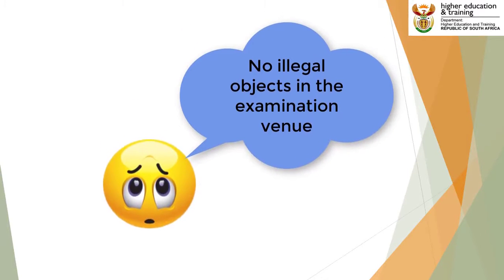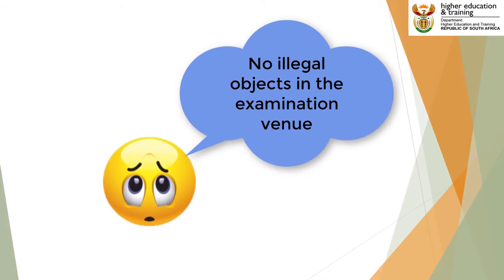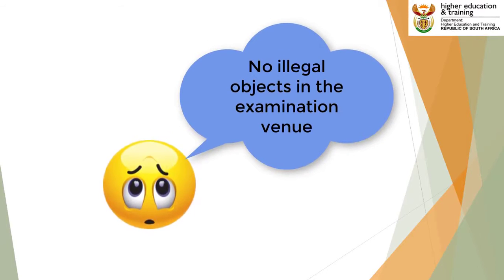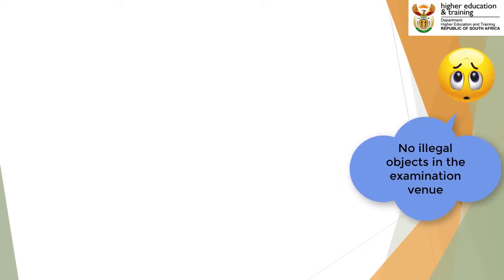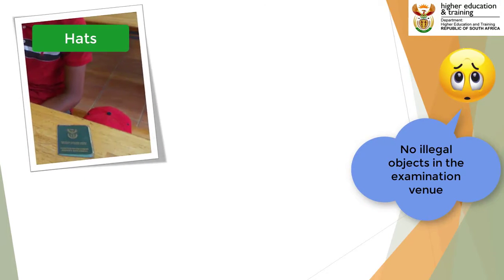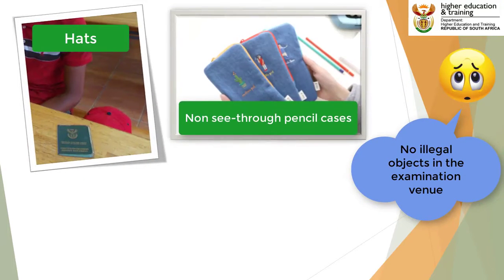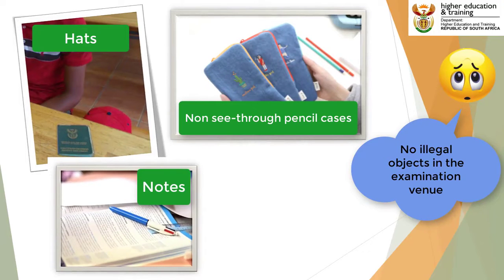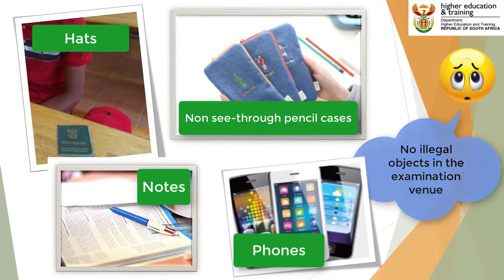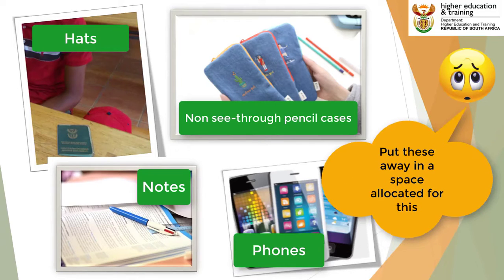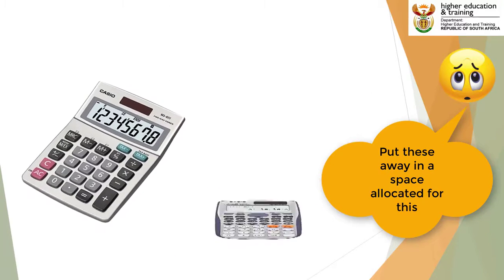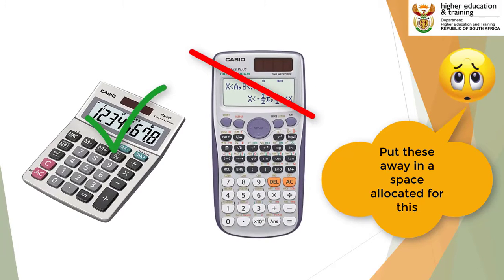Already at this stage, the invigilator must make sure that the students do not bring any illegal materials into the exam room, such as hats, pencil cases, extra paper, etc. If they do see any illegal material, these should be placed at the space made available for this. Only non-programmable scientific calculators are allowed into the exam room for exams where the use thereof is specified.